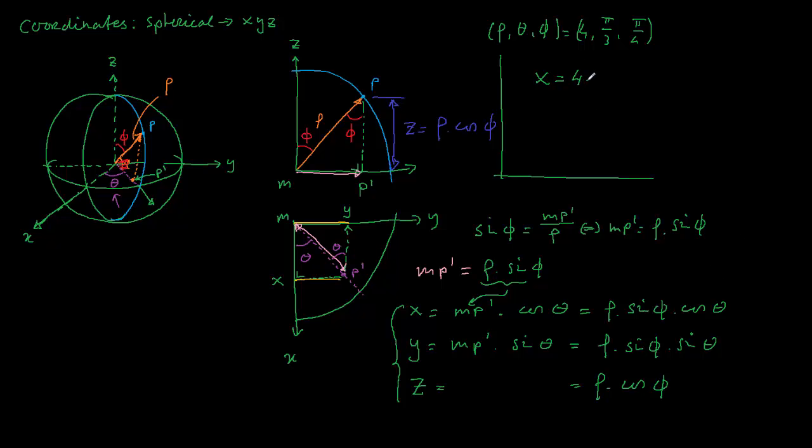You would get something like x is 4 times a half times square root of 2 times a half which will probably be square root of 2. Y is 4 times a half square root of 2 times a half square root of 3 which is square root of 2, okay.